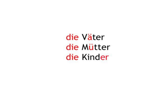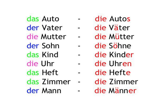As you can see, the issue here is the noun itself, which can undergo a variety of changes to indicate that it's not one but many. Das Auto, die Autos. Der Vater, die Väter. Die Mutter, die Mütter. Der Sohn, die Söhne. Das Kind, die Kinder. Die Uhr, die Uhren. Das Heft, die Hefte. Das Zimmer, die Zimmer. Der Mann, die Männer.